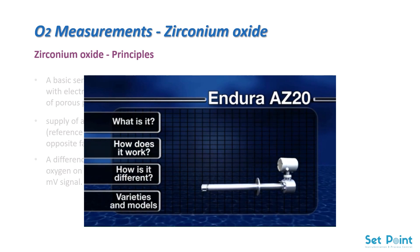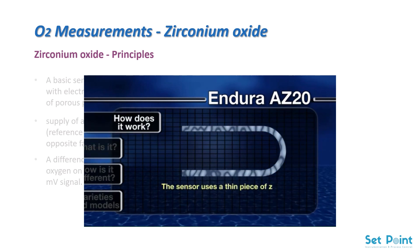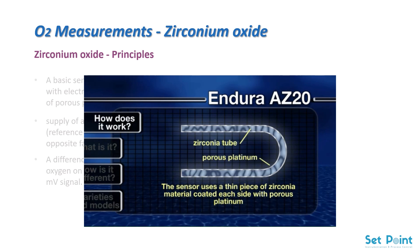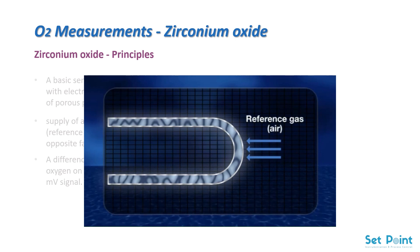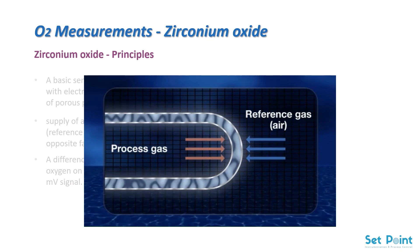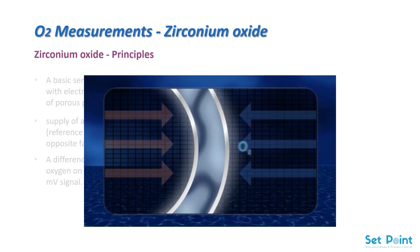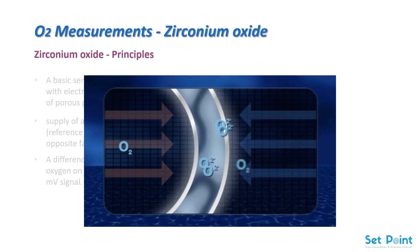How does it work? The Endura AZ-20 sensor uses a thin piece of zirconia material coated on each side with porous platinum. Air is supplied to one side as a reference gas to provide a constant oxygen concentration, and the process gas is presented to the opposite side. The platinum acts as a catalyst in the presence of oxygen gas, converting molecular oxygen to oxygen ions, which can then migrate through the solid zirconia electrolyte.